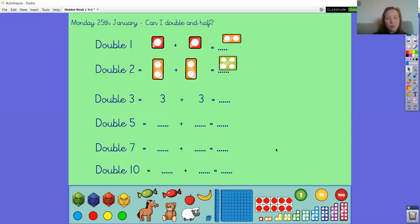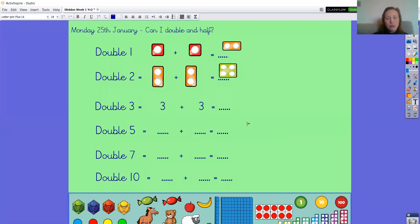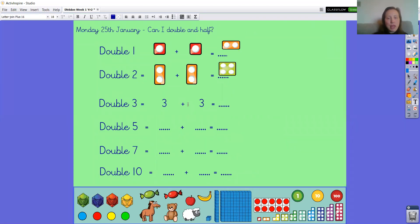Brilliant! Great calculating. We've got three add three, double three is six. For double five, we're going to do five add five, which gives us ten. For double seven, we're going to do seven add seven, which gives us fourteen. And finally, our double ten is the same as ten add ten, which gives us twenty.